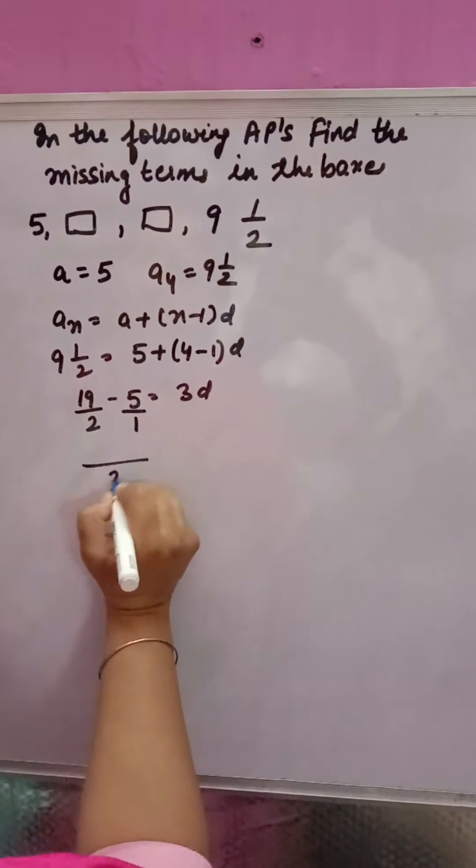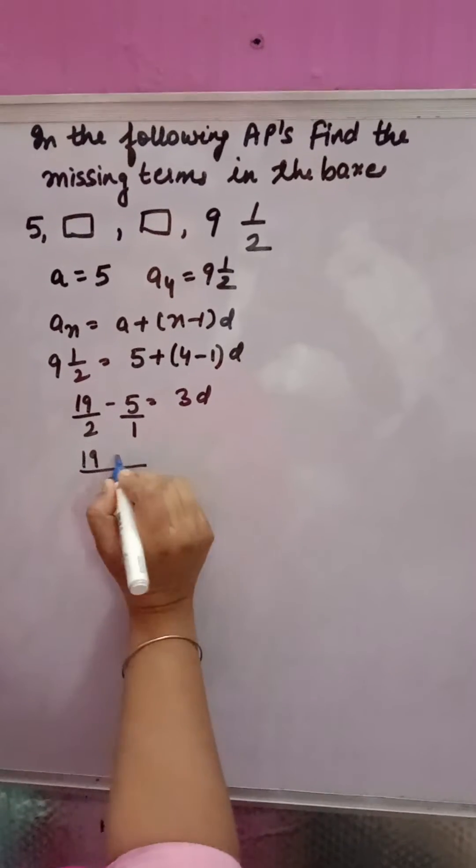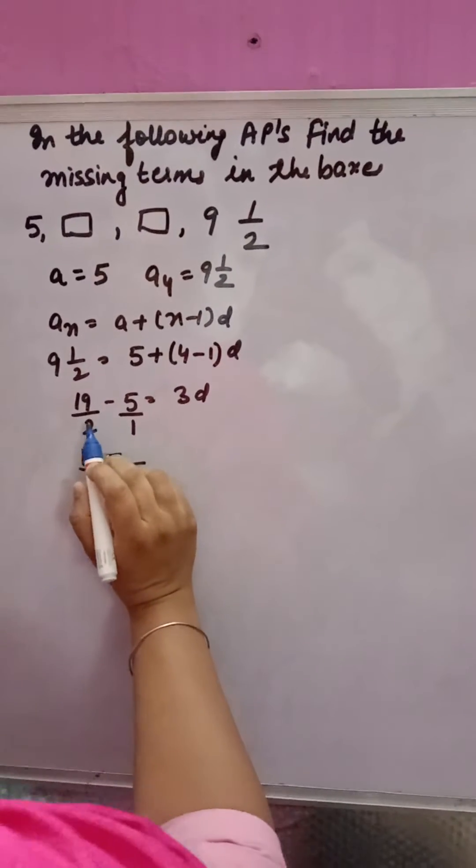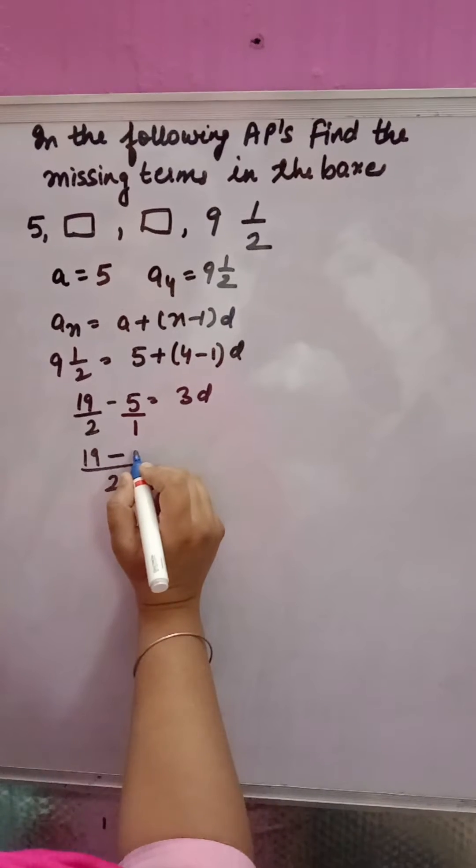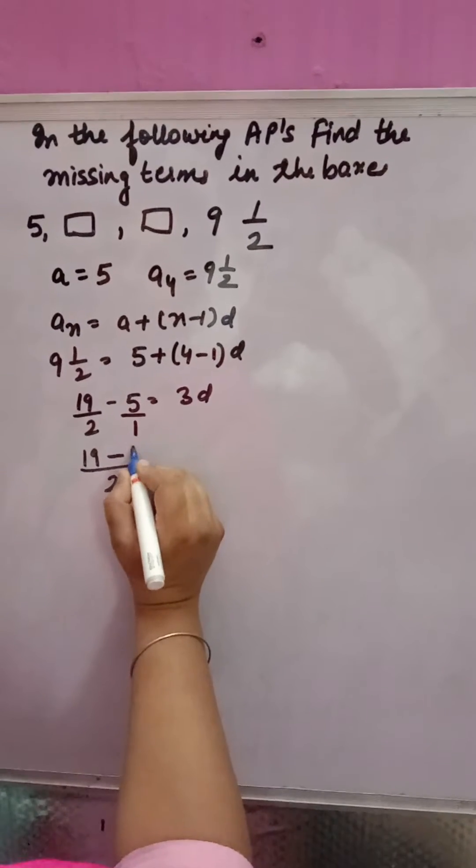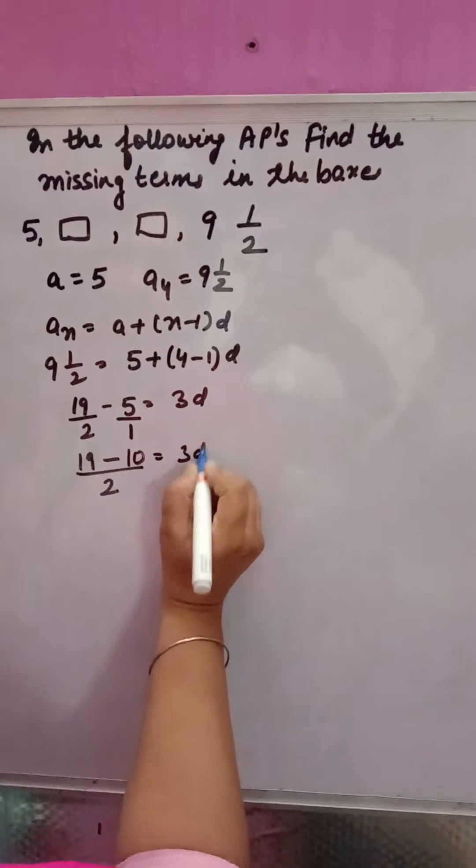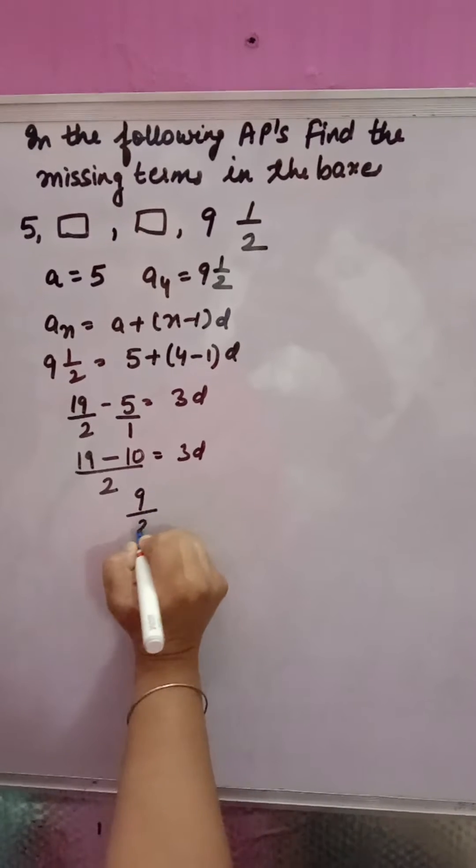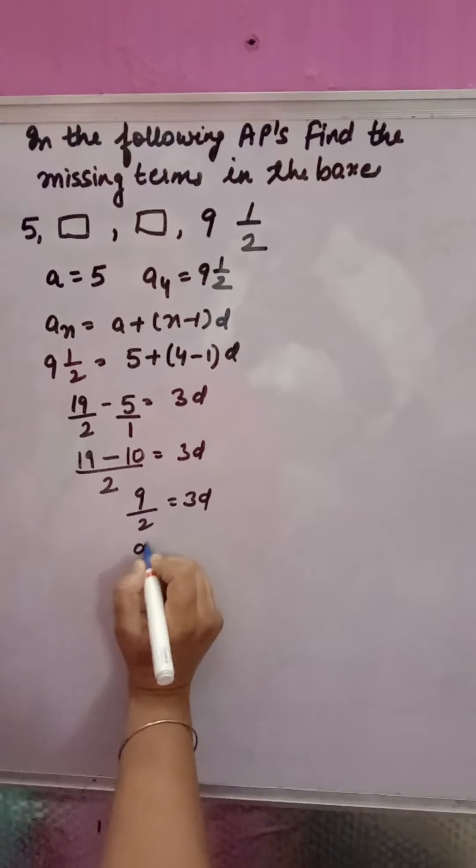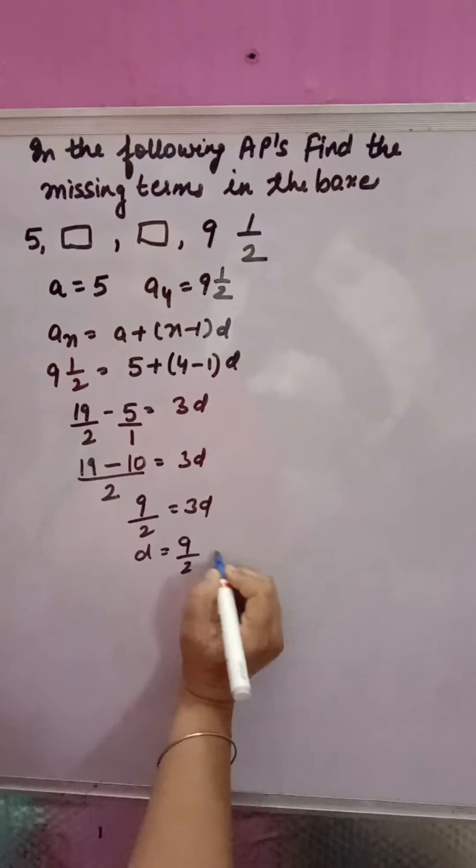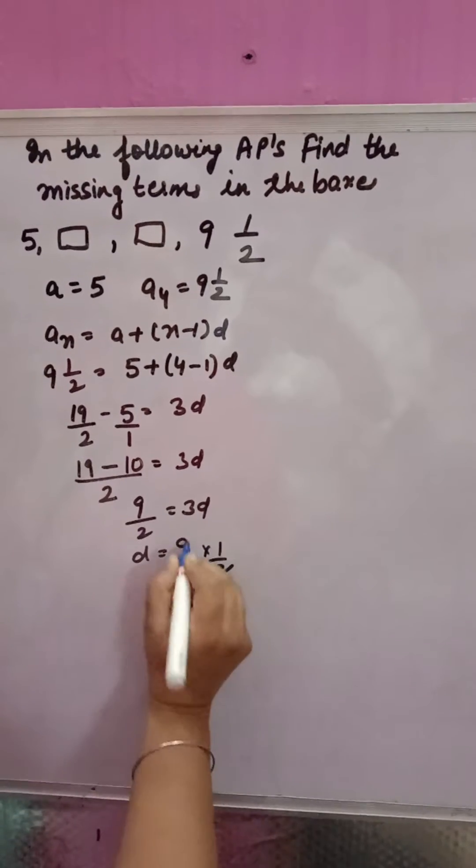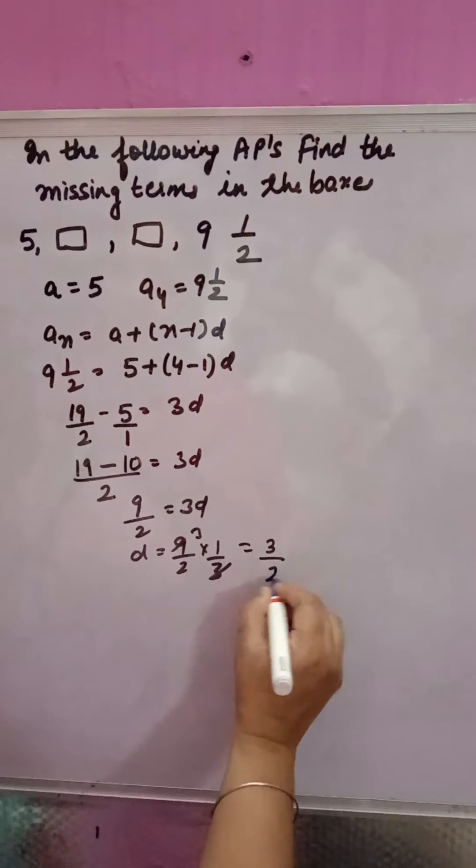Nothing is there, that means 1 is there. Taking LCM: 2 divided by 2 is 1, 1 into 19 is 19. 2 divided by 1 is 2, 2 into 5 is 10, equals 3d. 9 over 2 is equal to 3d. d will come equal to 9 by 2, and 3 will go down. That means 3 by 2.